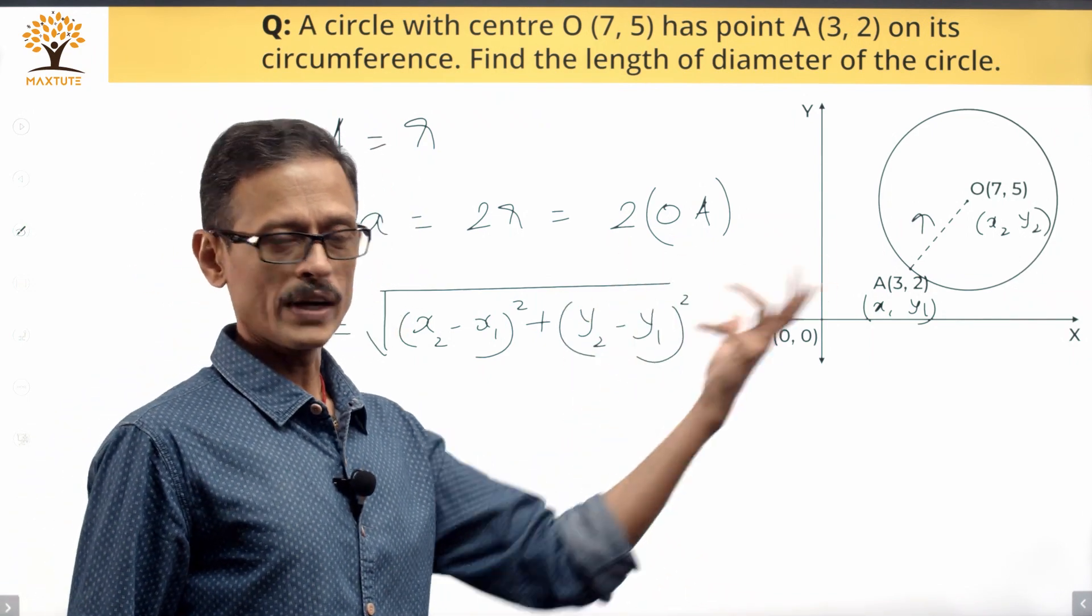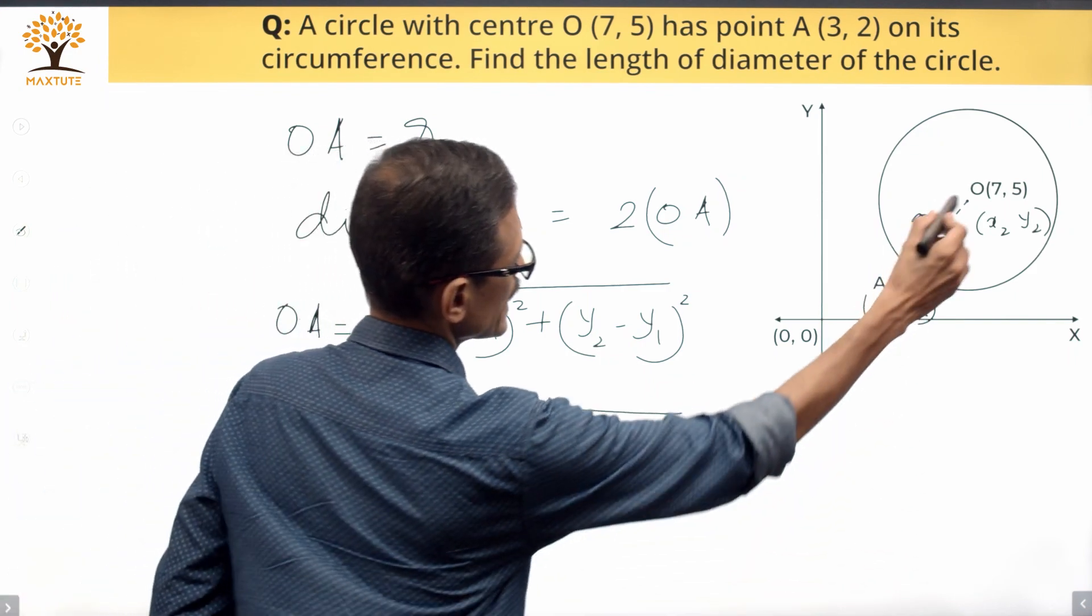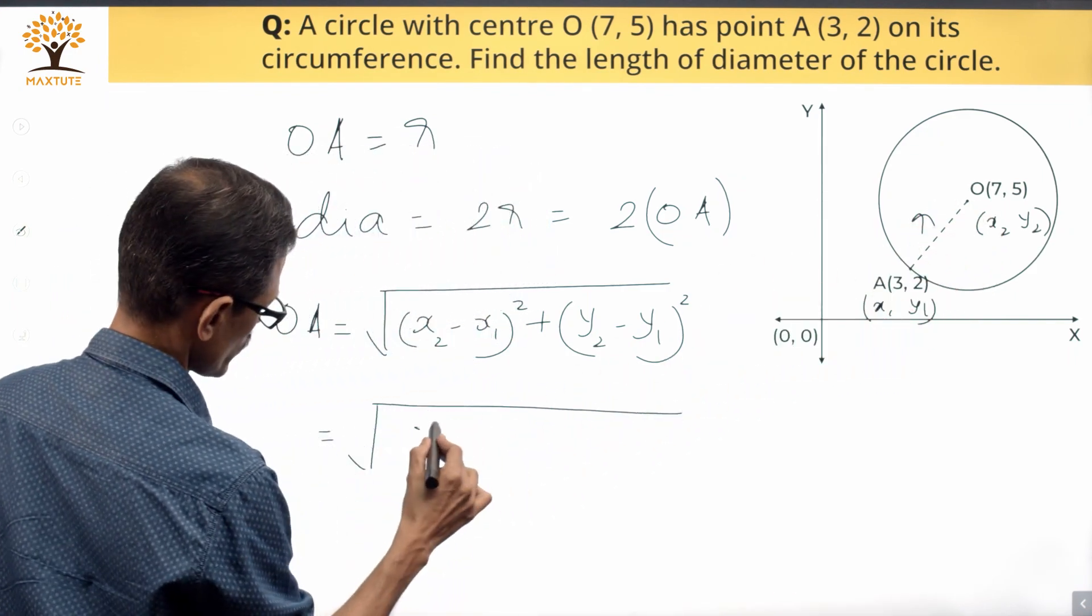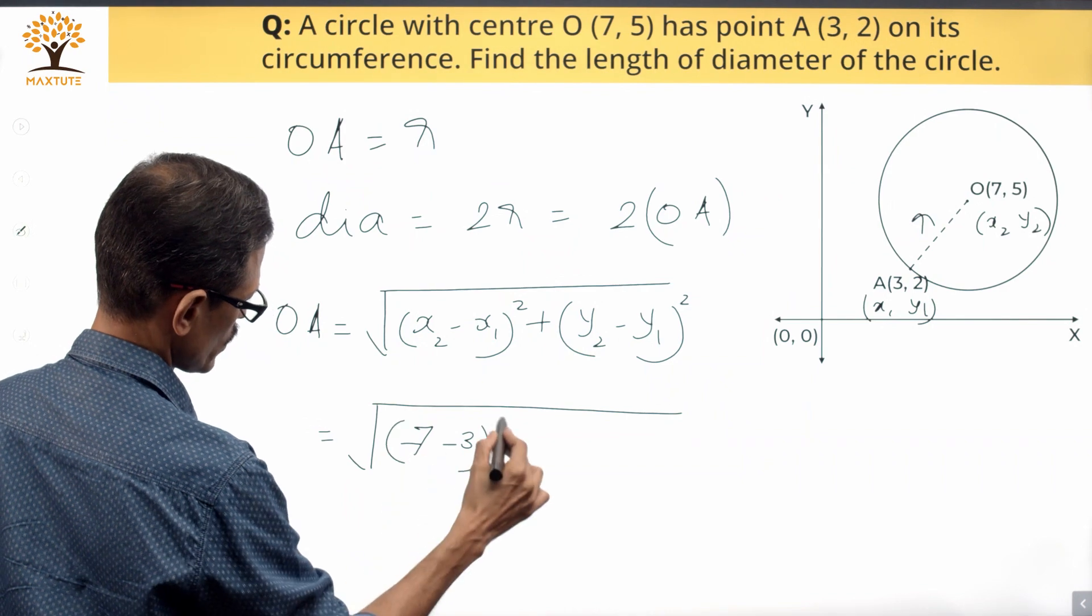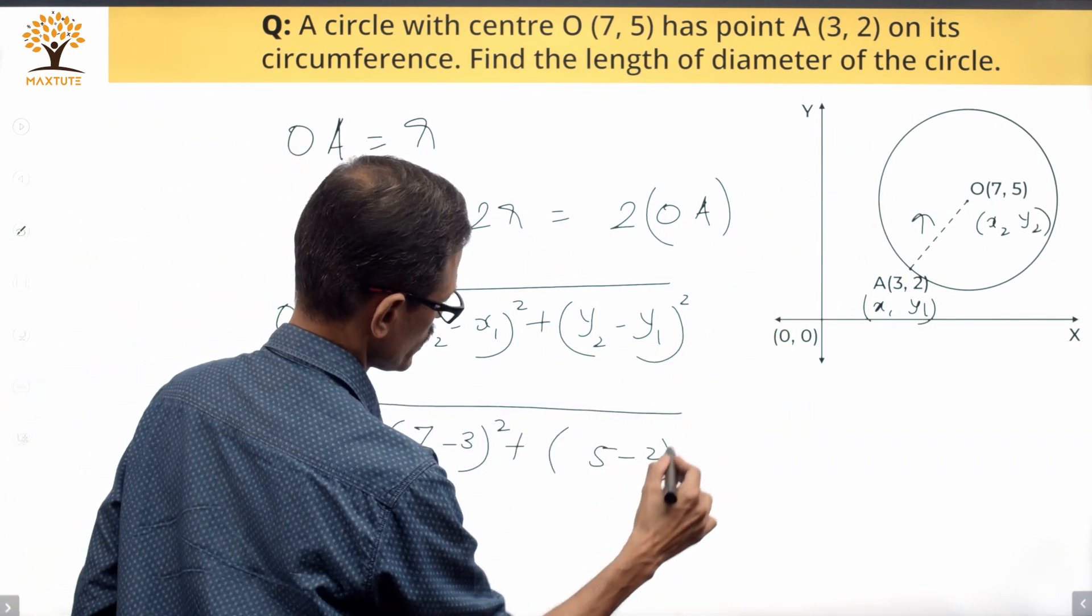Substituting the values: x2 is 7, x1 is 3. So (7 minus 3) squared plus, y2 minus y1 is 5 minus 2, so (5 minus 2) squared.